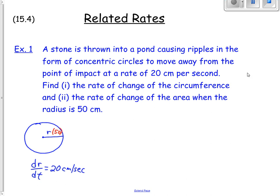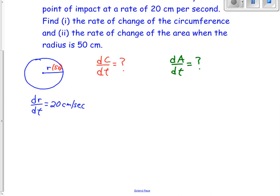That's telling me that the rate of change of the radius with respect to time, dr/dt, is 20 centimeters per second. What they want me to find is the rate of change of circumference, dC/dt, and then the rate of change of area, dA/dt. Let's start with circumference. We need to come up with an equation that relates our variables. We all know C is equal to 2πr.